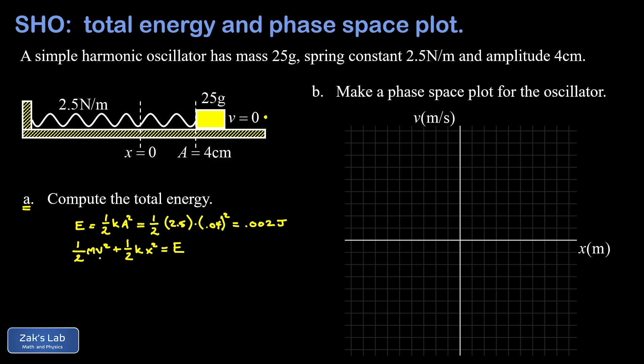If I'm making a plot of velocity as a function of position, then v is our y variable and x is our x variable. I realize what I'm looking at here is the equation for an ellipse. If I have a positive coefficient on y squared and a positive coefficient on x squared, and those two terms add up to a constant, that's the equation of an ellipse.